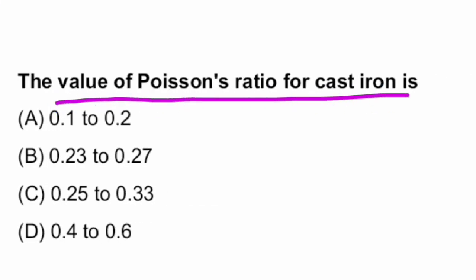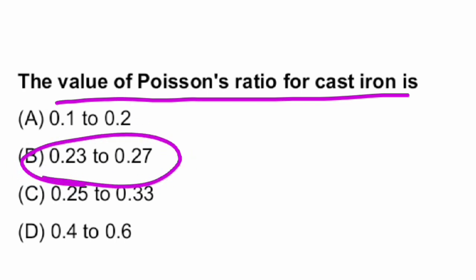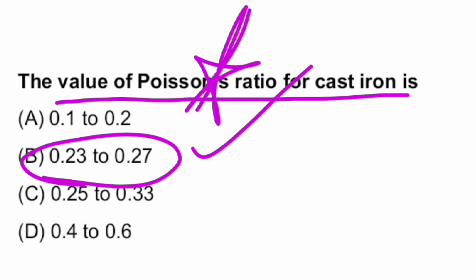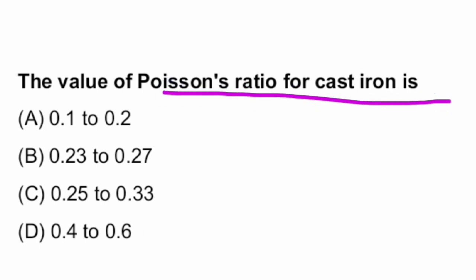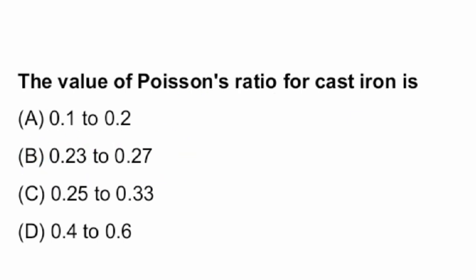The value of Poisson's ratio for cast iron lies between 0.23 to 0.27, and Poisson's ratio doesn't have any units. So the Poisson's ratio for cast iron is 0.23 to 0.27.